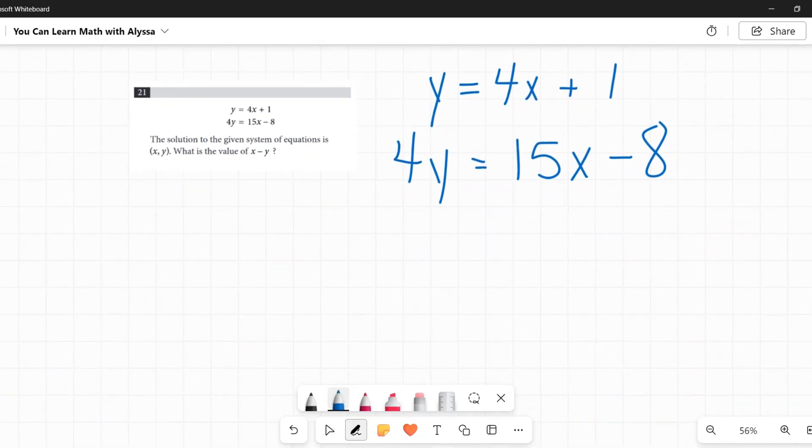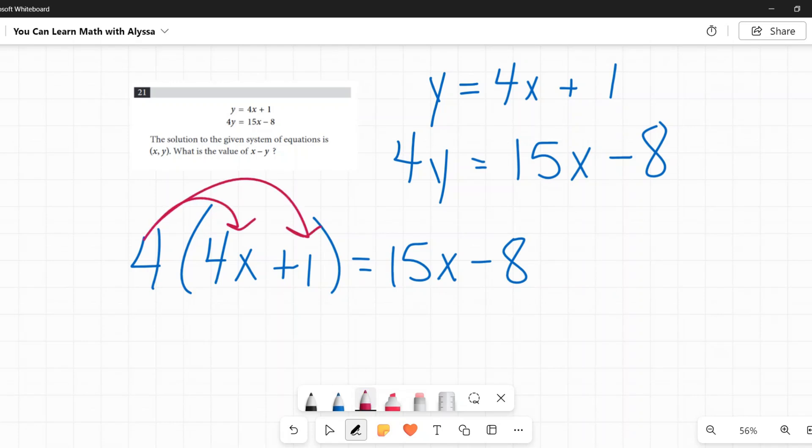So let's say if I do substitution, I'm going to plug that 4x plus 1 in for y. And I have 15x minus 8 on the right. So on this left side, I'm going to distribute. 4 times 4x is 16x. 4 times 1 is 4. Still on the right, 15x minus 8.